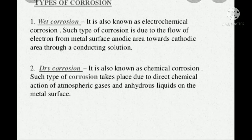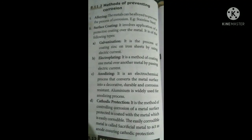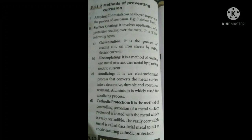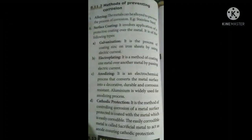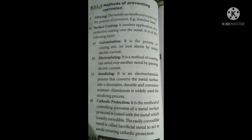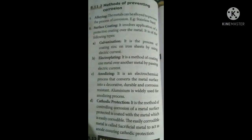To prevent corrosion: one method we already studied is alloying — alloying one metal with another is an important preventive method for resisting corrosion. The next method is coating one metal over the other. There are many techniques here. First is galvanization — coating zinc on iron sheets. By applying electric current, we coat the surface of the iron with zinc by soldering, etc.